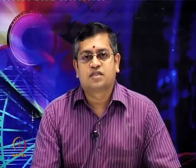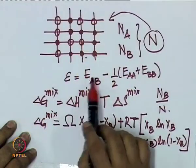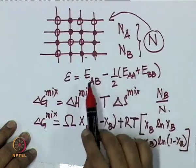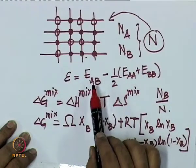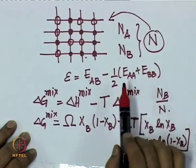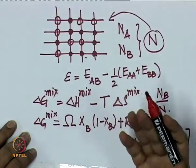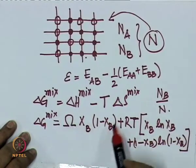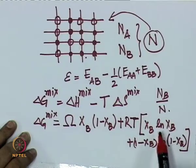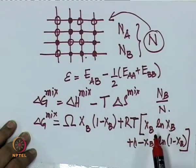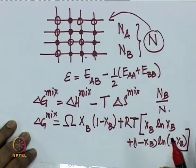If omega equals zero, we call that an ideal solution, because omega is related to the difference between AB bond energies and the average of AA and BB bond energies. If this quantity is zero, the system doesn't distinguish between AB bonds and AA/BB bonds, meaning it doesn't distinguish between A and B type atoms. In this case, the contribution becomes zero, so the system is only dominated by entropy, and you form a random solid solution.